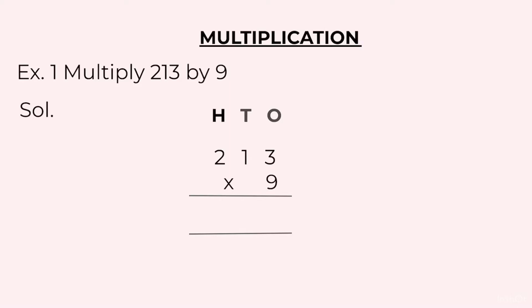Multiply 213 by 9. We will start by multiplying 9 with 3. 9 threes are 27, 2 at the top, 7 at the bottom. Then we will multiply 9 by 1. 9 ones are 9 plus 2, 11. 1 at the top, 1 at the bottom. Then we will multiply 9 by 2. 9 twos are 18 plus 1 at the top, 19. The answer is 1917.